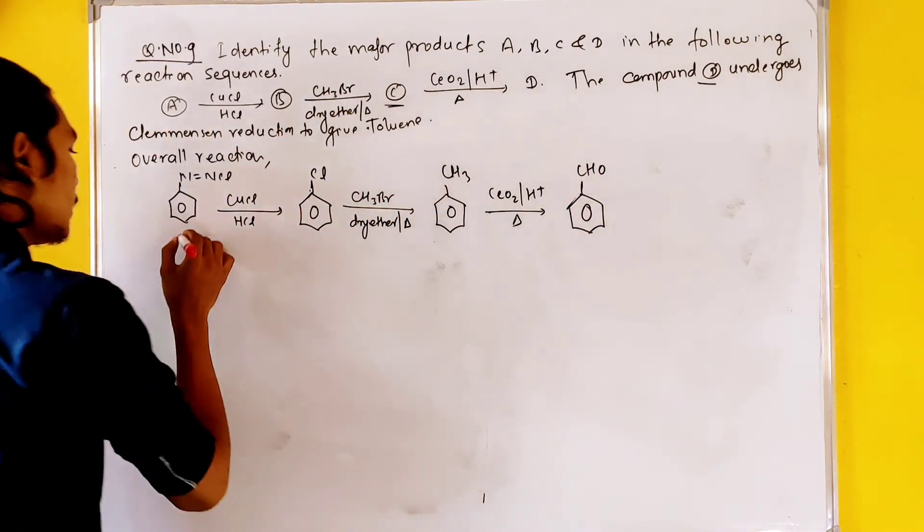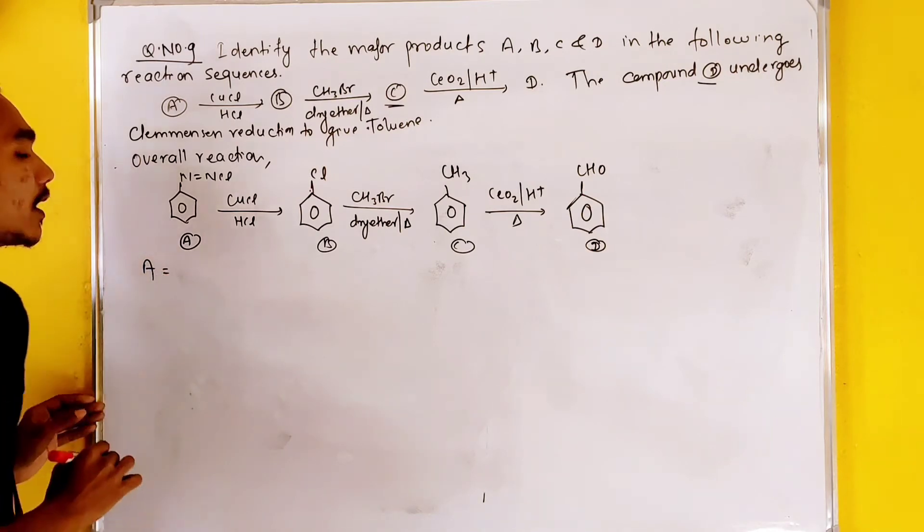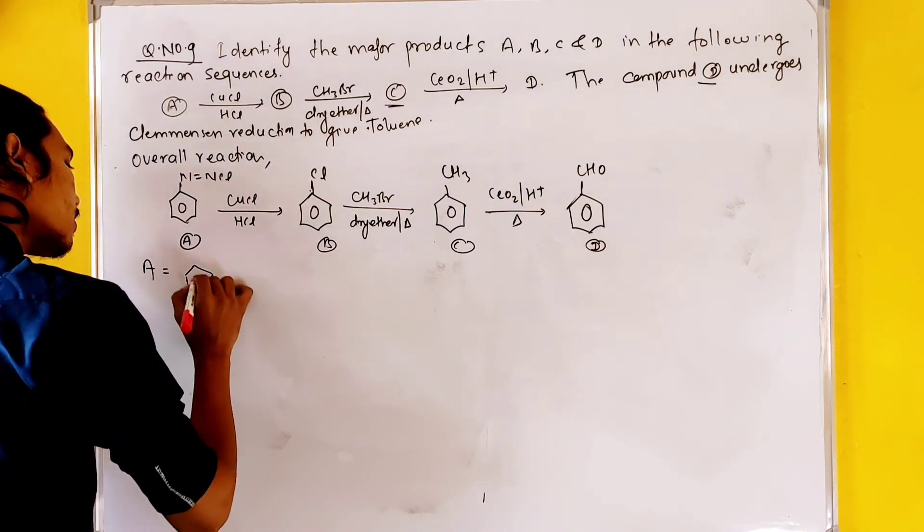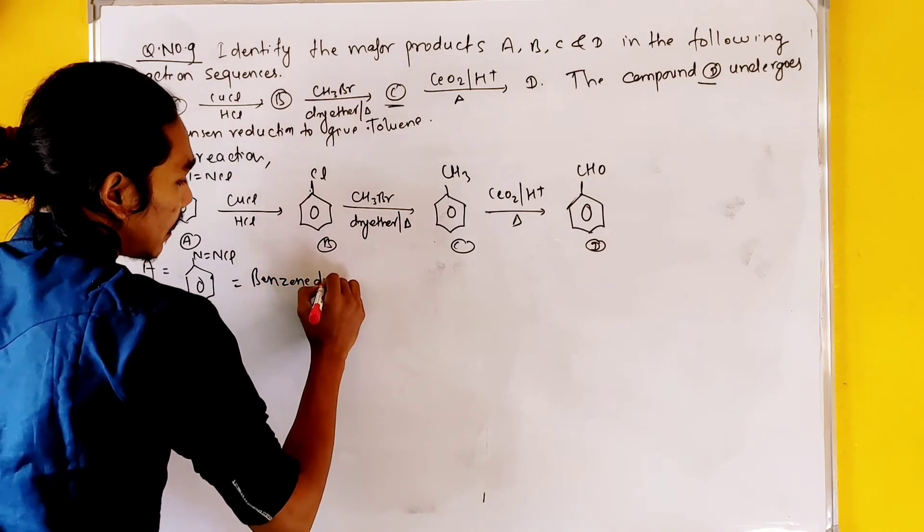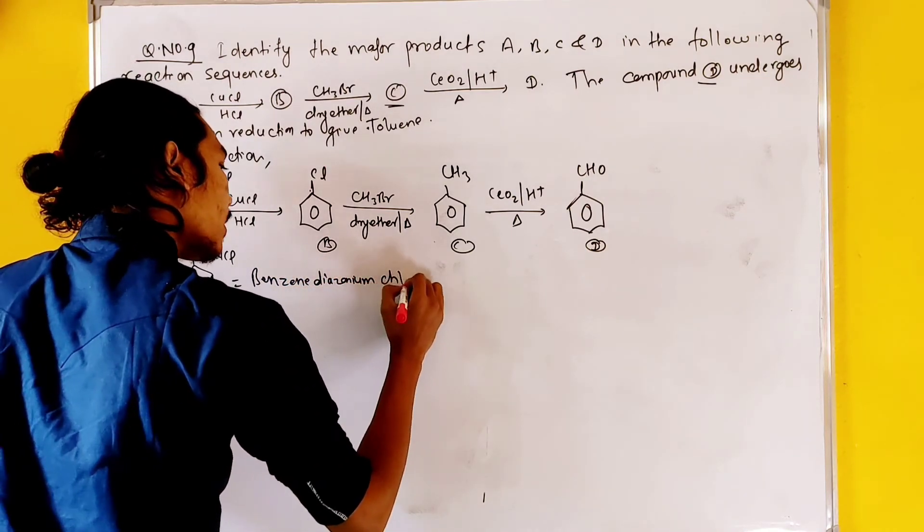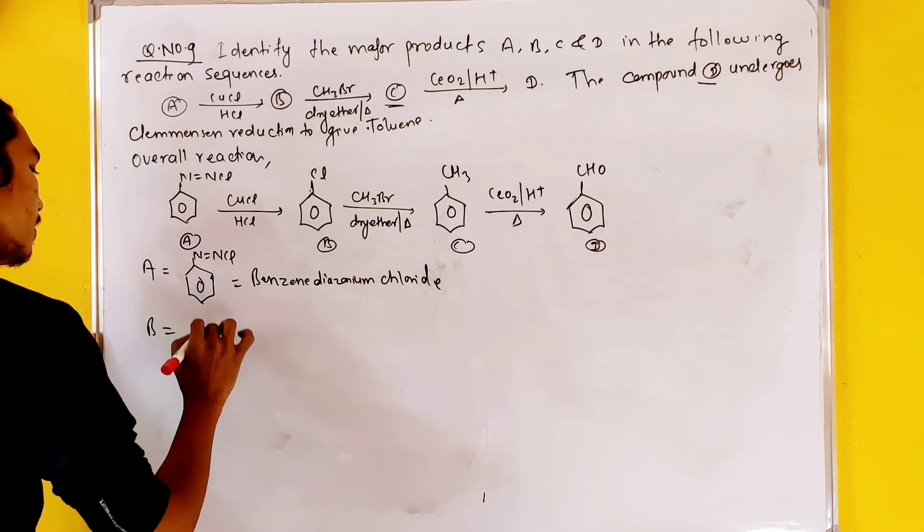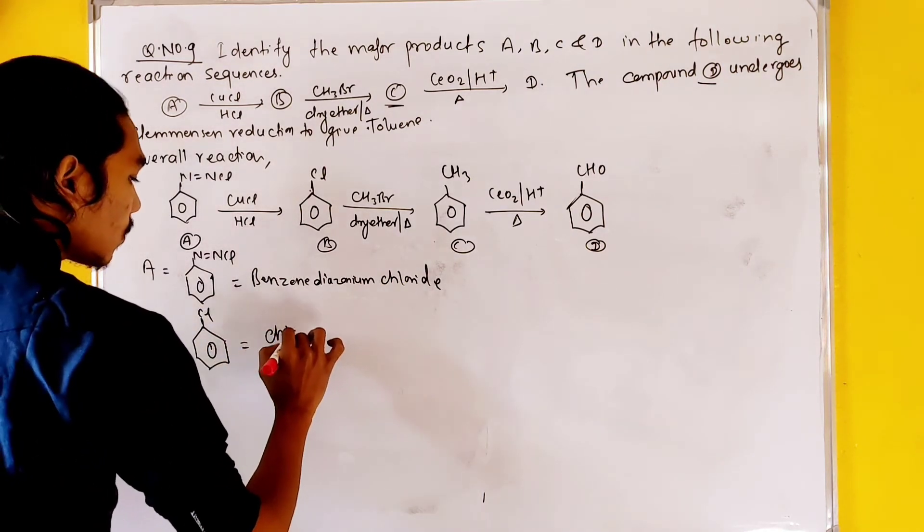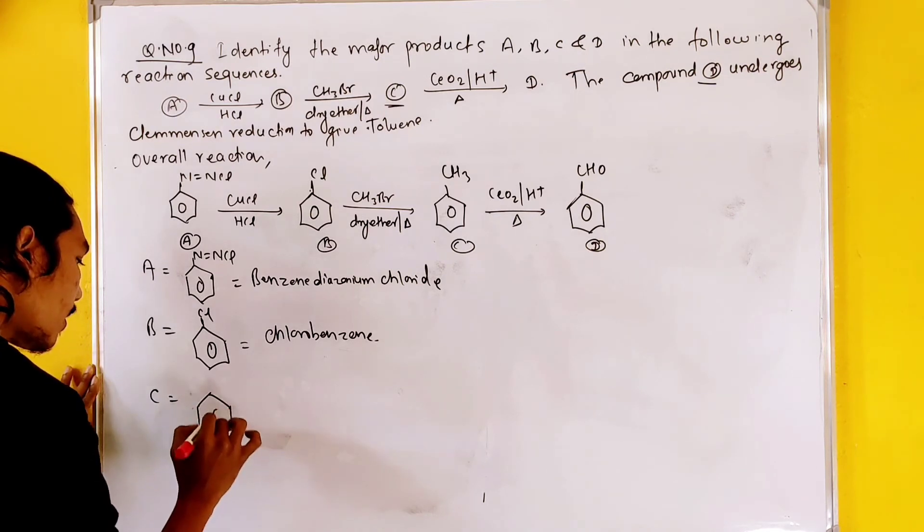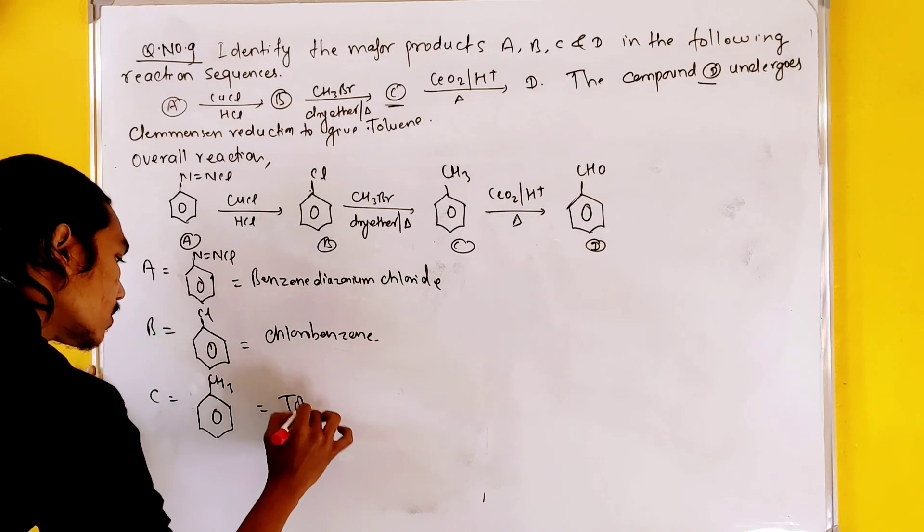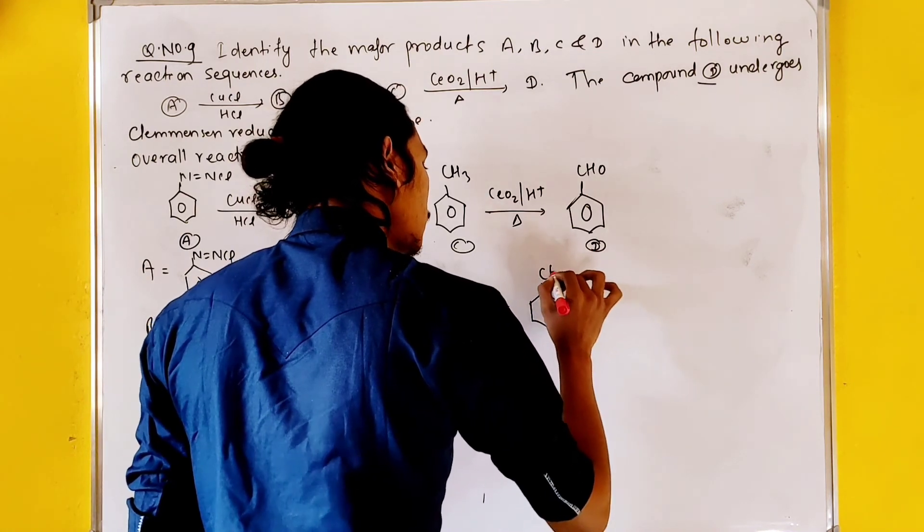This is compound A, B, C, and this is D. Now A is benzene diazonium chloride, N double bond NCl. Compound B is chlorobenzene. Compound C is toluene, and compound D is benzaldehyde.